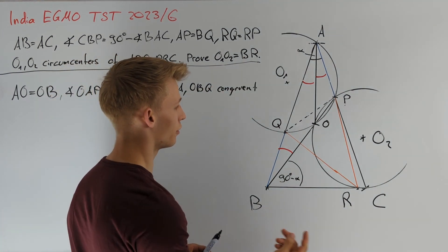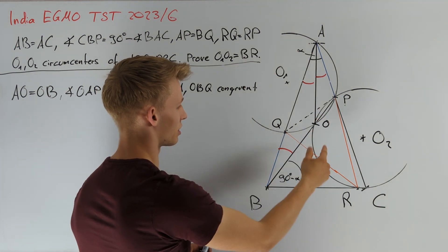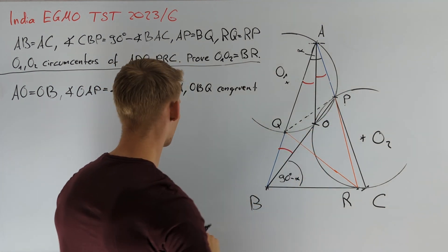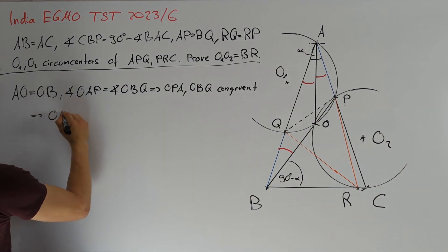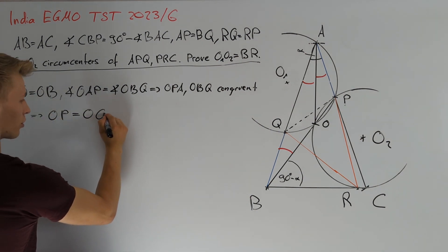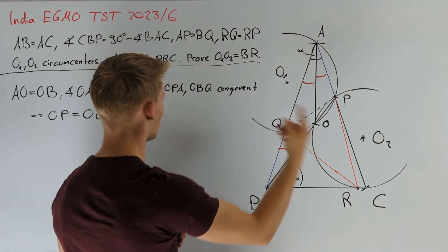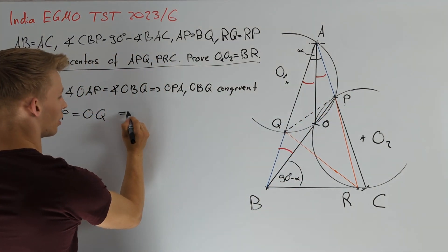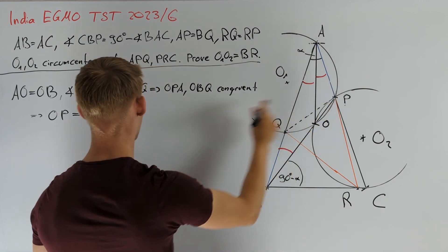This directly implies that the third pair of sides, OP and OQ, are also equal, so OP equals OQ. Since these two angles are also equal, we conclude that O lies on the circumcircle of triangle AQP.